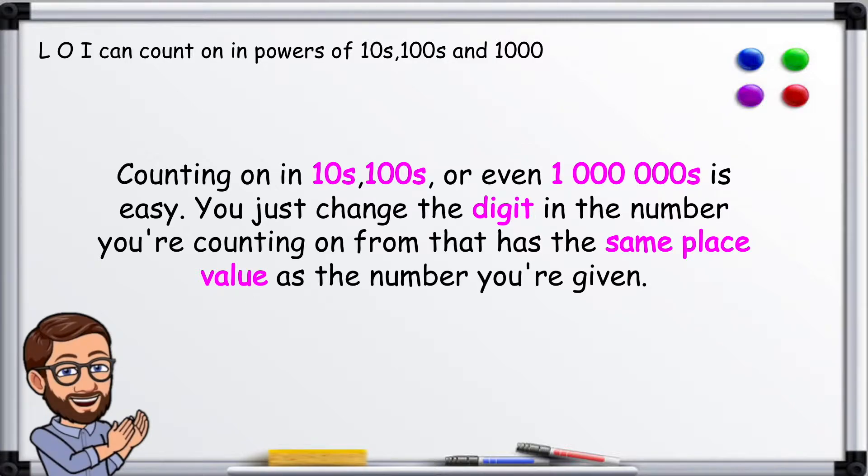Counting on in tens, hundreds or even millions is easy. You just change the digit in the number you're counting on from that has the same place value as the number you're given.